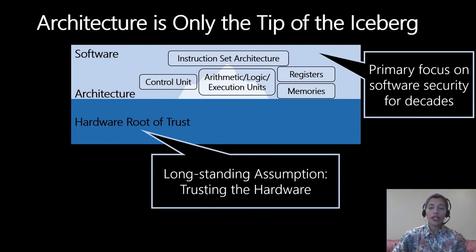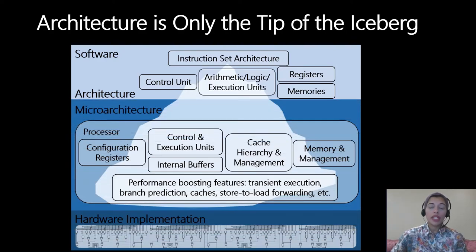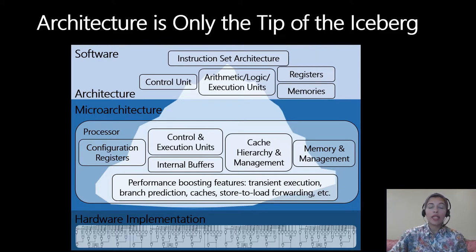For long, the focus has largely been on software-only vulnerabilities, and we always assumed trust in the underlying hardware of our computing platforms, which served inherently as the root of trust of our systems. However, these recent microarchitectural attacks have broken these assumptions because they're exploiting issues that originate in the microarchitecture and the underlying hardware, and they're exploited by means of software.